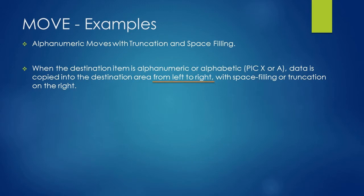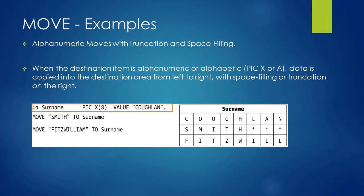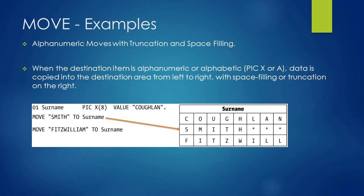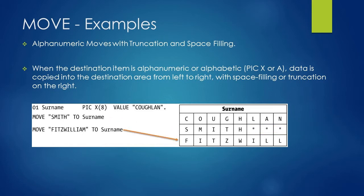Here is an example of alphanumeric moves covering both truncation and space filling. We have declared a variable named SURNAME with PIC X(8), meaning it can hold 8 characters, and assigned an initial value of 'Coglan'. Since Coglan has 8 characters, the variable SURNAME will be completely filled, as you can see on the right side of the example. Now we use MOVE to assign 'Smith' to the SURNAME variable. Since Smith is 5 characters, it fills from the leftmost position: S, M, I, T, H — and the remaining positions 6, 7, and 8 will be filled with spaces.